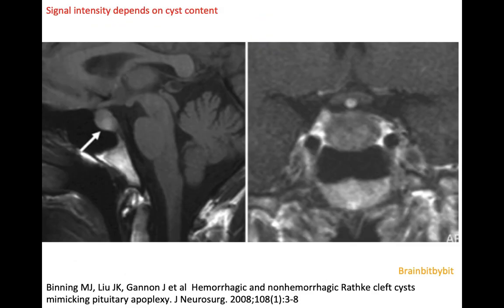If the fluid is more than just a cleft, you have a Rathke's cleft cyst. The signal intensity of Rathke's cleft cysts depends on the cyst content. The epithelium can form very watery CSF-like fluid, and then it's high on T2 and low on T1, but sometimes the fluid resembles motor oil and is much thicker and proteinaceous, and then it has high T1 signal. So Rathke's cleft cysts can have every signal intensity.